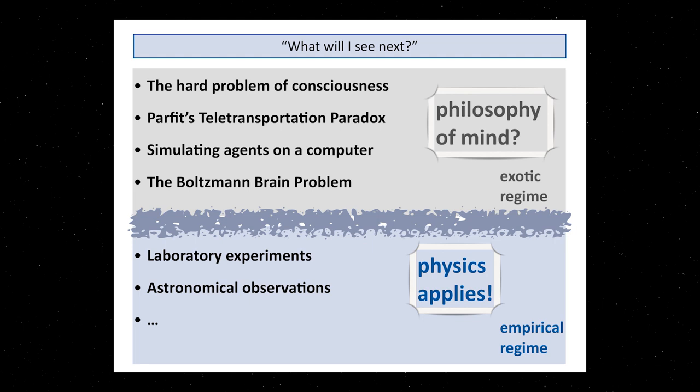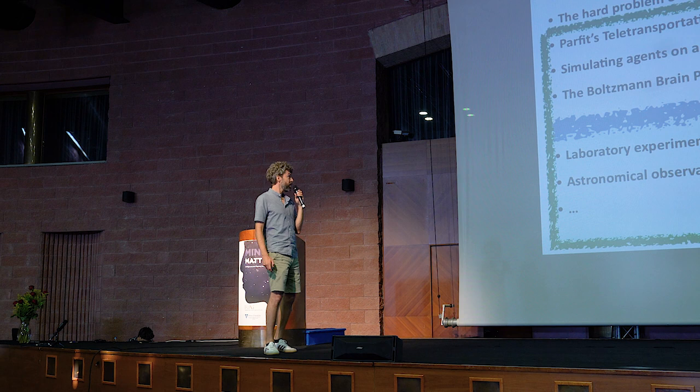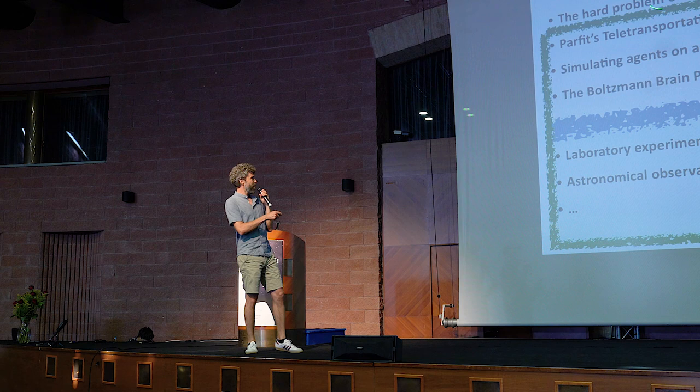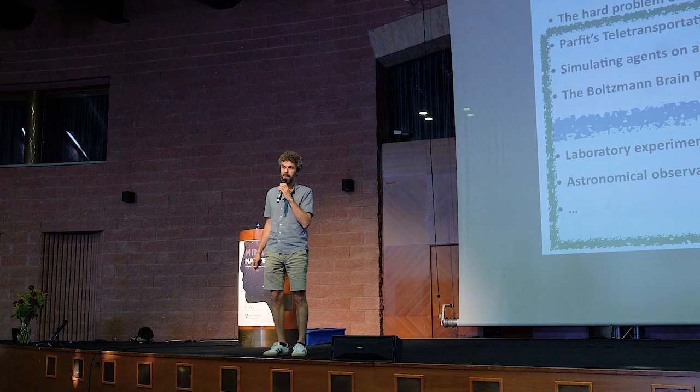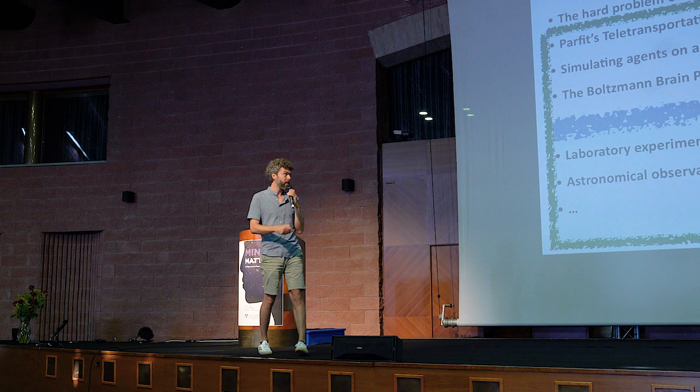Where do we go from here? The obvious thing you might want to try is to say, perhaps we can have a unified approach. It will say nothing about consciousness, that's a separate question. But perhaps we can have something like a probability, some mathematical rule that tells us uniformly in all situations what we see next, not only in physics experimental setups, but also in these more exotic regimes. That would be very useful.